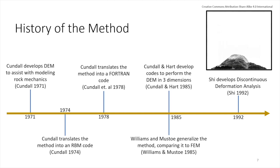Until 1985, the development of the discrete element method was dominated by the work of Peter Cundall, which is pictured in the figure up here in the top right. Thereafter, it had been refined and translated a number of times. To go through the timeline, Cundall developed DEM to assist with modeling of rock mechanics in his 1971 thesis, actually. In 1974, he translated the method into an RBM code, and later, in 1978, he translated it into a FORTRAN code. In 1985, Cundall and Hart co-developed codes to perform DEM in three dimensions, which is a big step. And in 1985 as well, Williams and Mustoe generalized the method, comparing it to finite element analysis. In 1992, Shi developed discontinuous deformation analysis, which is a very similar method. And you can see this image of Peter Cundall on the top right, which has been repeatedly disintegrating, has been formed using discrete element analysis, displaying granular flow after dropping the particles that would make up his face.